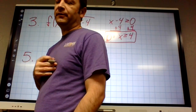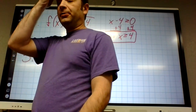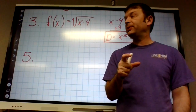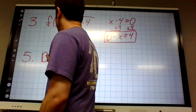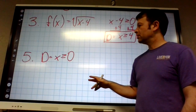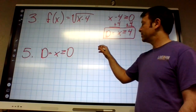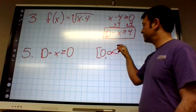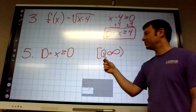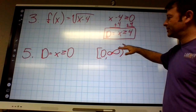Number five is the same as number one. The seven is not under the square root, so it doesn't affect whether the square root is negative or not. So the domain on number five is x greater than or equal to zero. If you use a math app on your phone, the answer will look like interval notation. Don't do that — I won't give you credit for it, even though it's right. It's a different kind of notation; it just means it goes from zero to infinity.